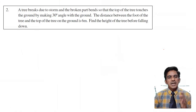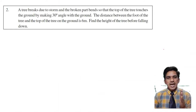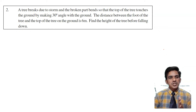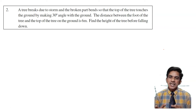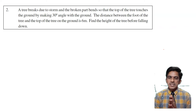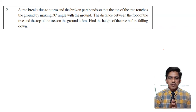Let us look at the second problem. A tree breaks due to storm and the broken part bends so that the top of the tree touches the ground making 30 degrees with the ground. The distance between the foot of the tree and the top of the tree on the ground is 6 meters. Find the height of the tree before falling down.